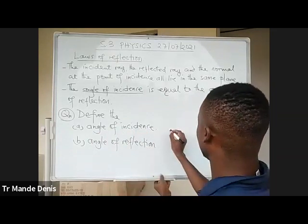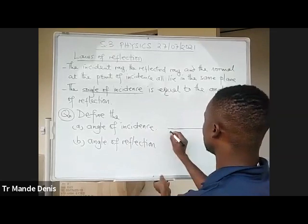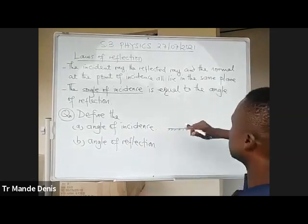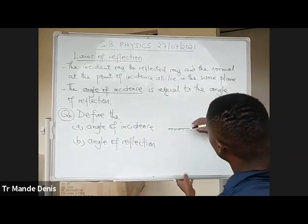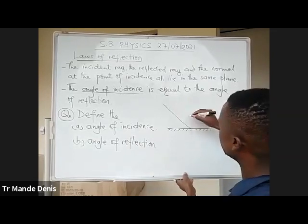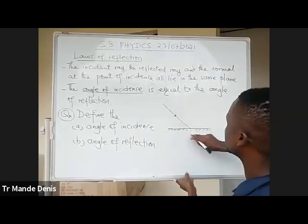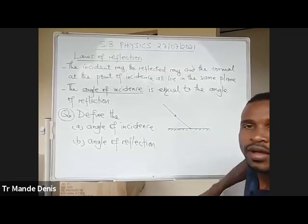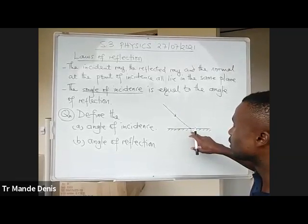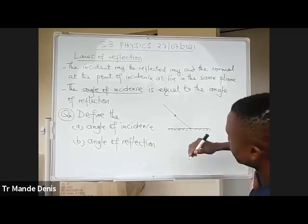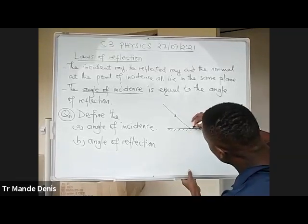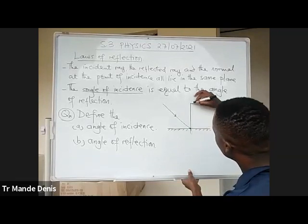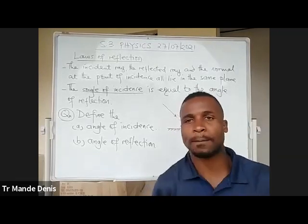For reflection, if this is your reflecting surface — which you can call a plane mirror — the ray which strikes the reflecting surface is called the incident ray. The point where the incident ray strikes the reflecting surface is called the point of incidence. At the point of incidence, we draw a normal, meaning we draw a perpendicular line.